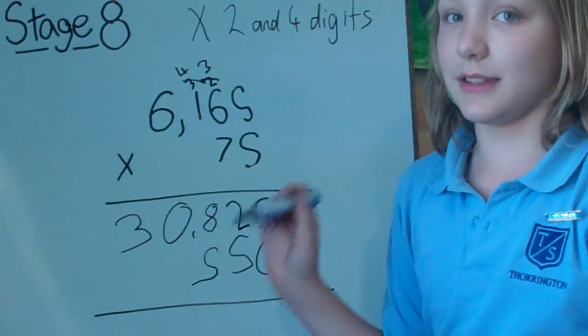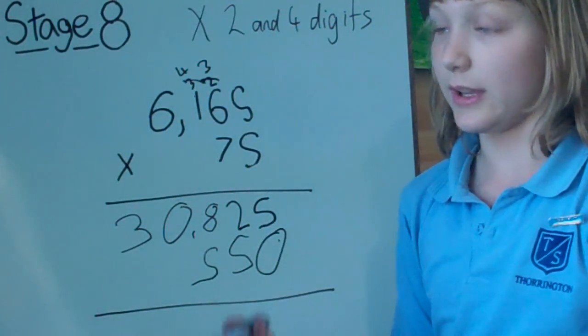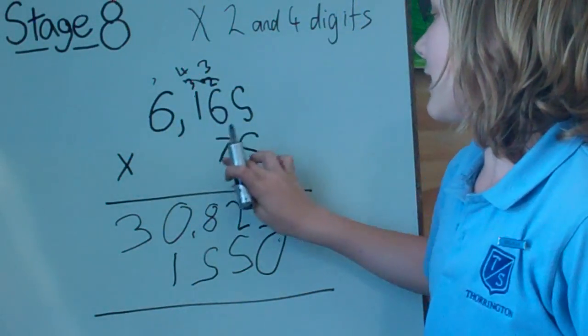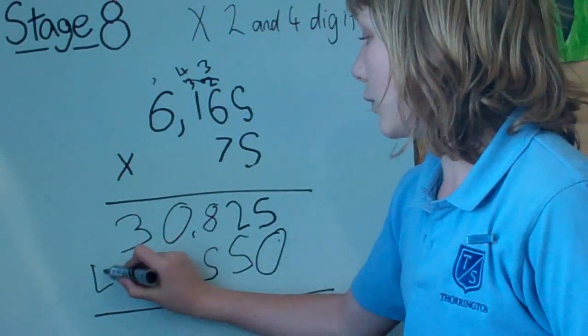Now 1 times 7 is 7, plus 4 is 11. Put the 1 down here, carry the 1. 6 times 7 is 42, plus 1 is 43.